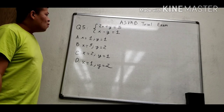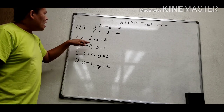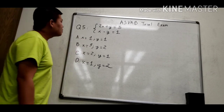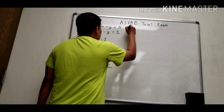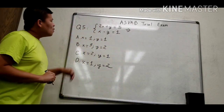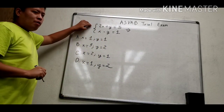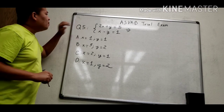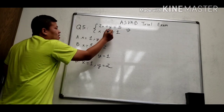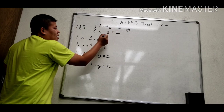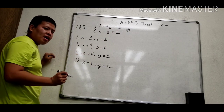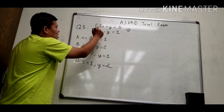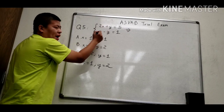In this question, we need to find the solution x and y. We know that we will sum up the two equations together because y and minus y will eliminate each other. That's why we find the solution of x first.